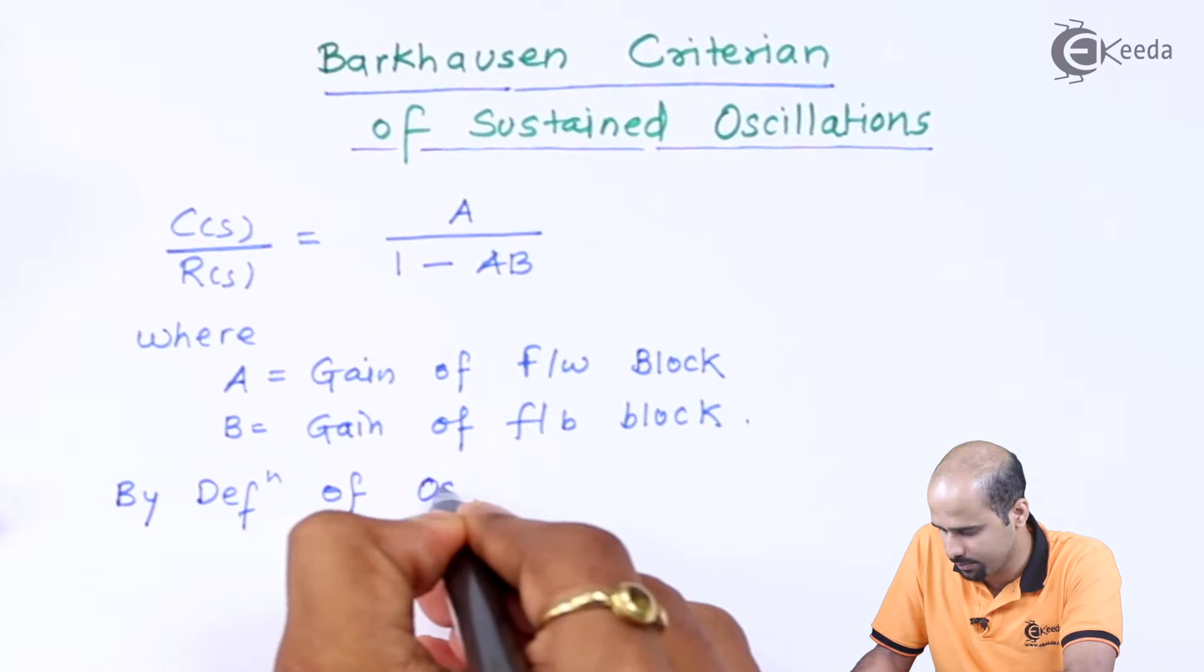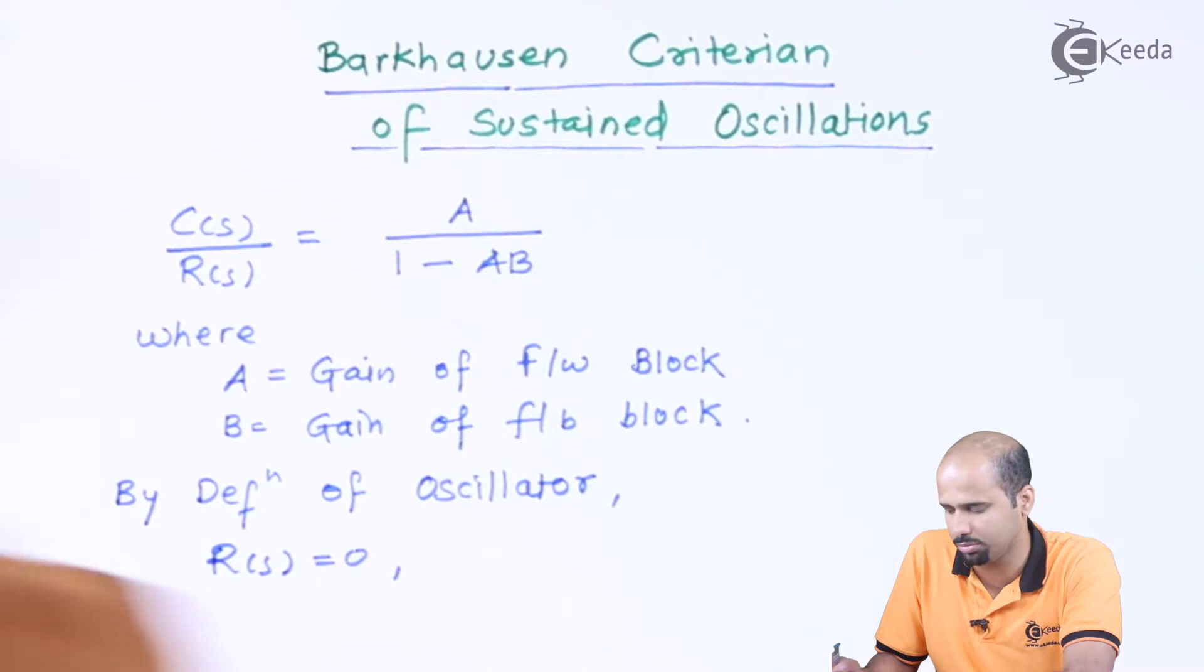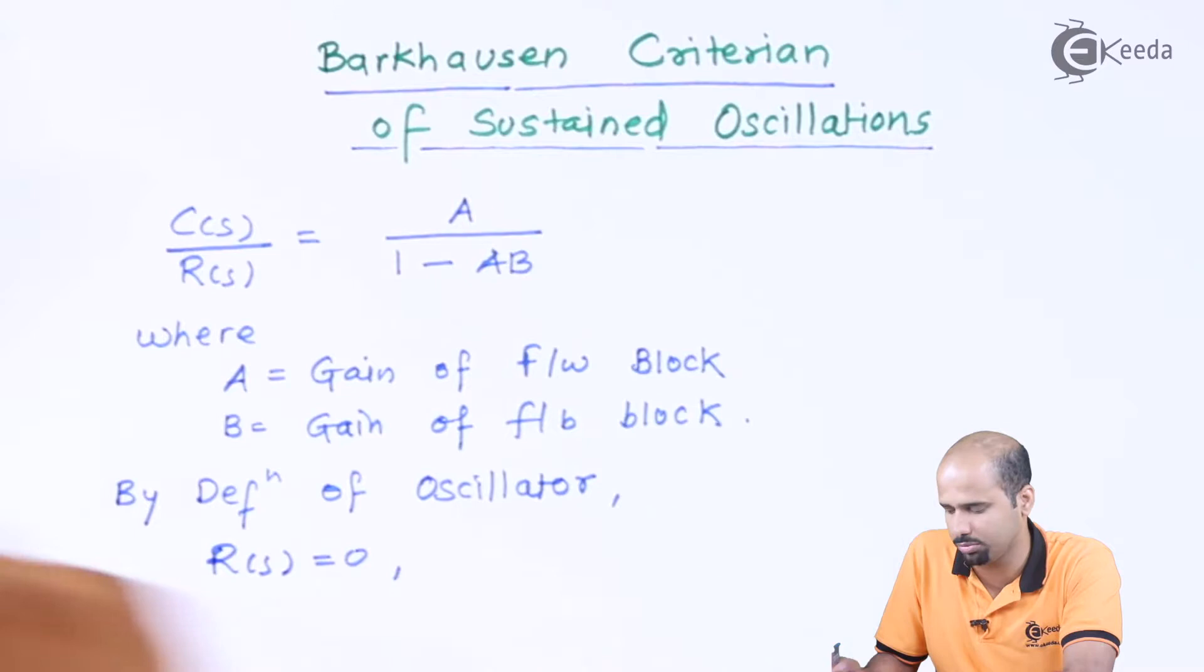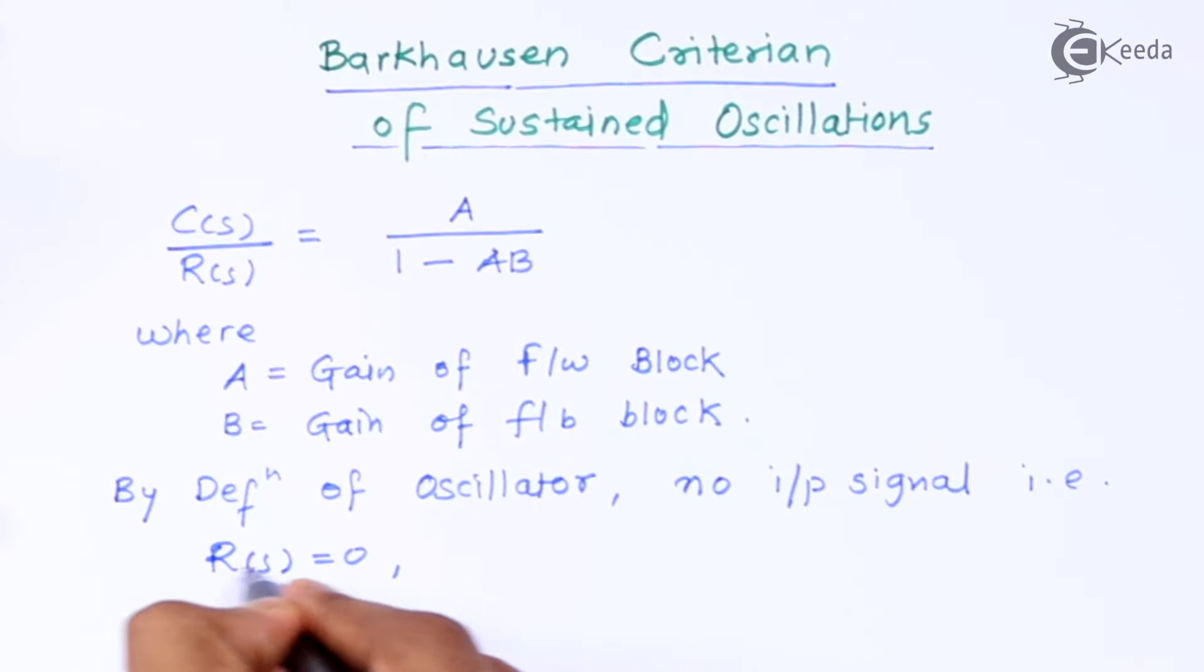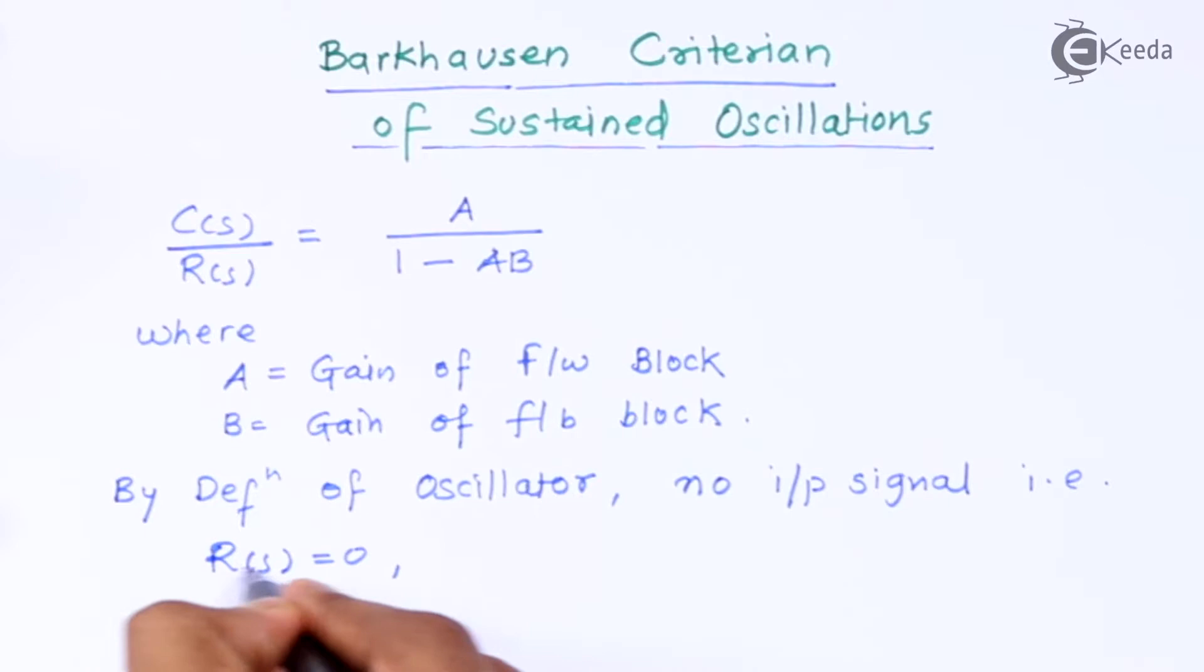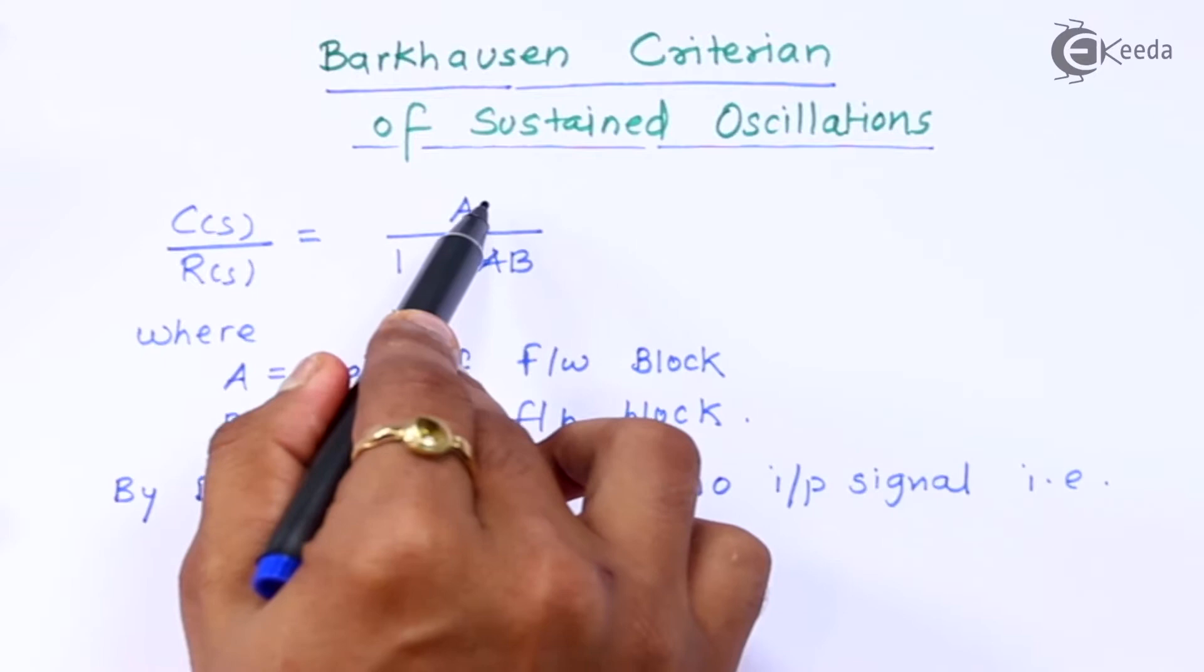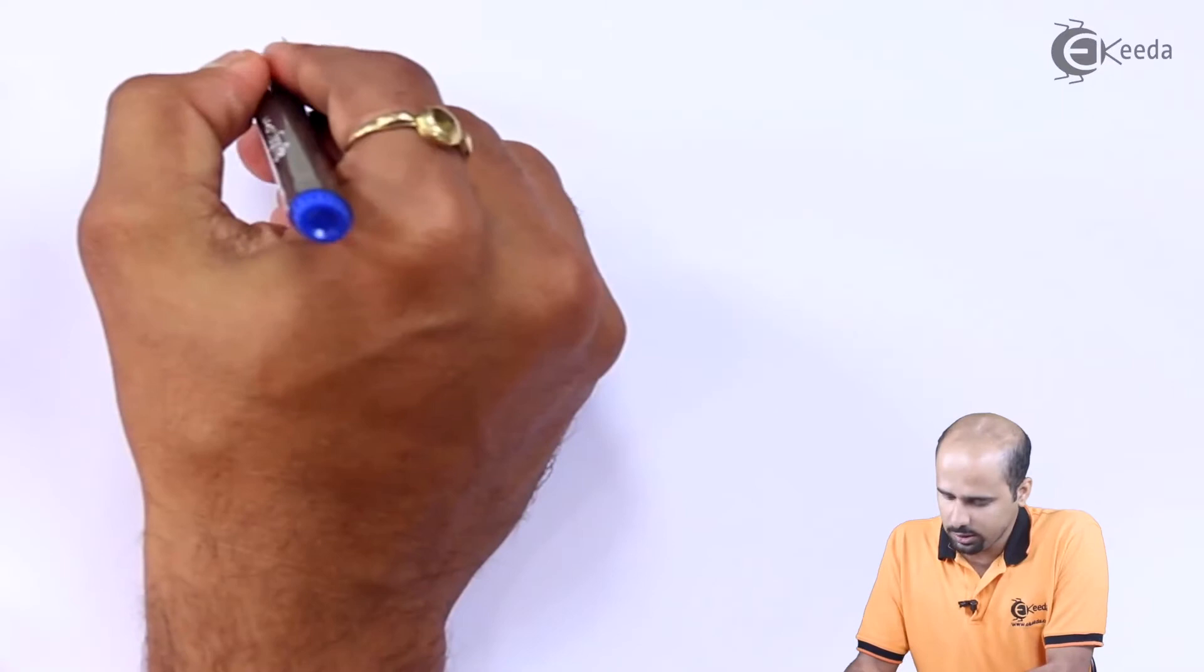So we will say by definition of oscillator R(s) should be equal to 0. So there should not be any input signal. So we will say no input signal, that is R(s) is equal to 0, and as we all know that C(s) upon R(s) is equal to A upon 1 minus AB.